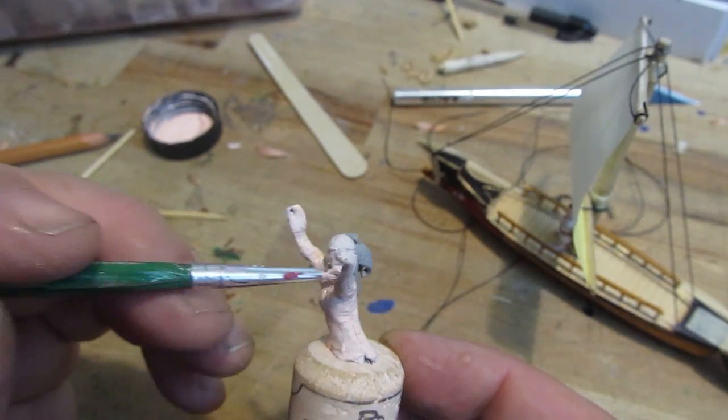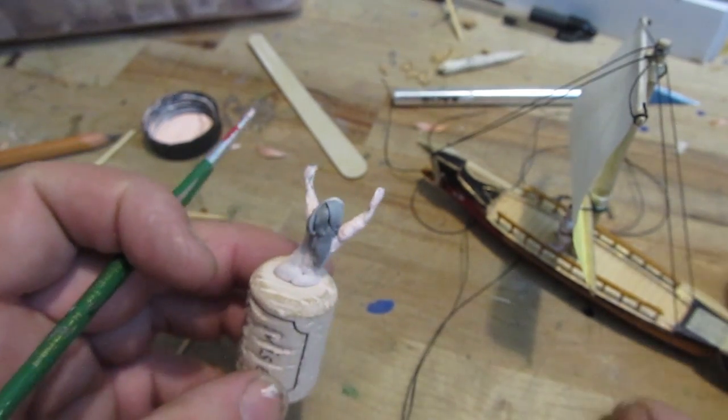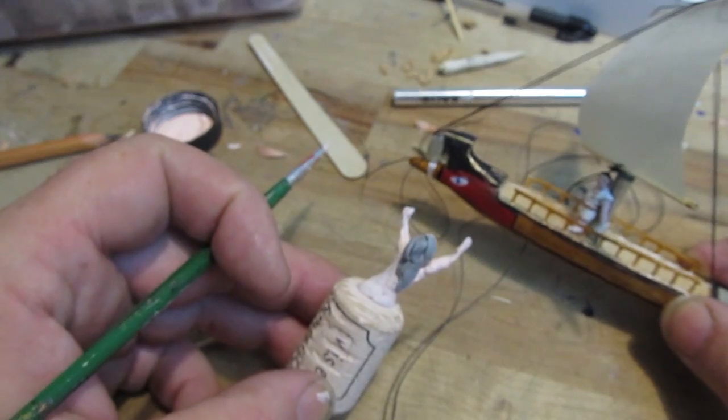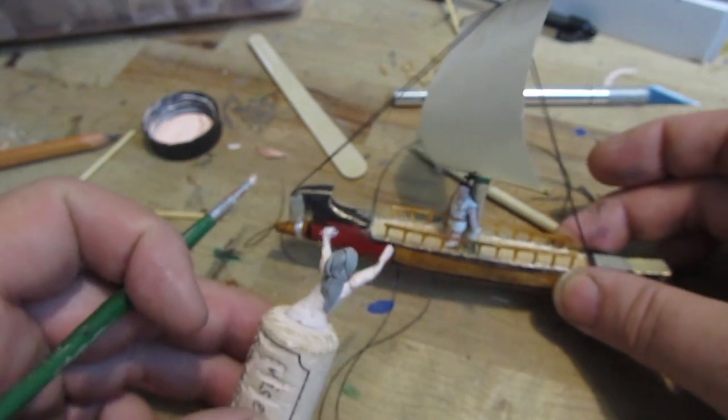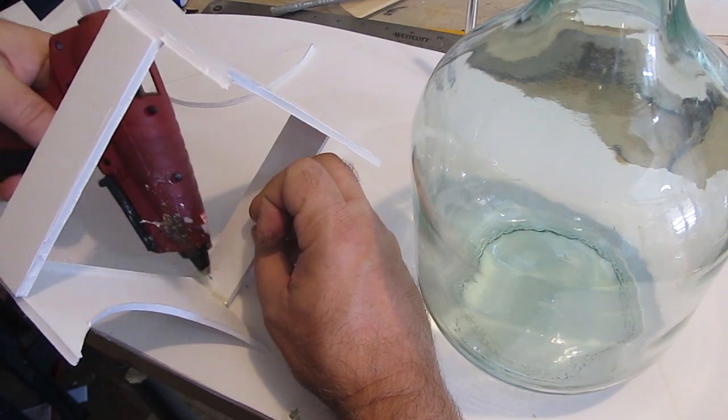And also the sirens, I made two sirens. I did the same thing, made a wire armature, sculpted them, painted them, I'll remove them from the cork, and then install them into the scene in the bottle. So, let's move on to the bottle.